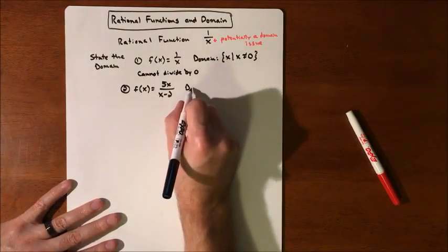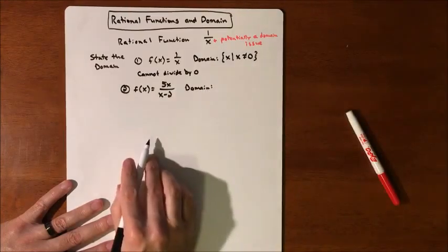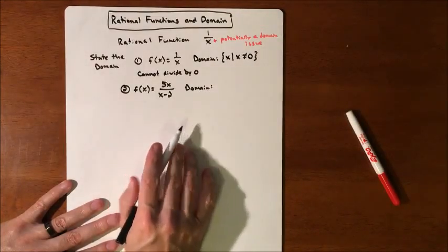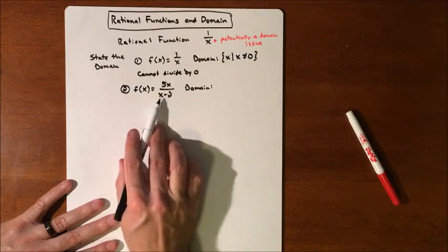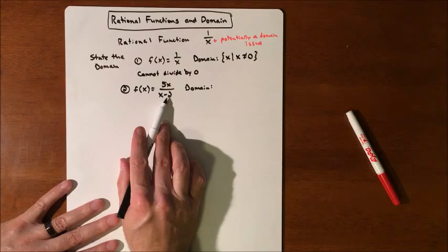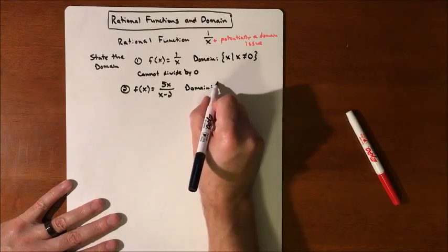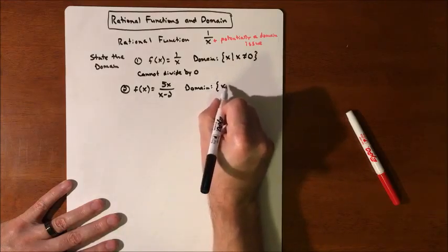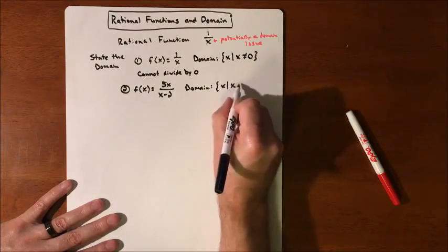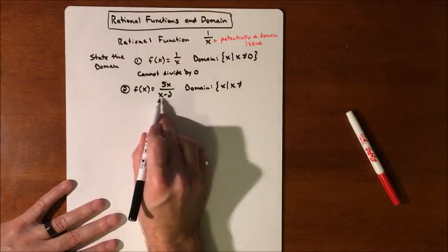Our domain is, the only issue that we're going to have is dividing by zero. Now zero this time is okay, because zero minus two is not zero. So we want to figure out what number actually makes the denominator zero. And that value is going to be our issue.